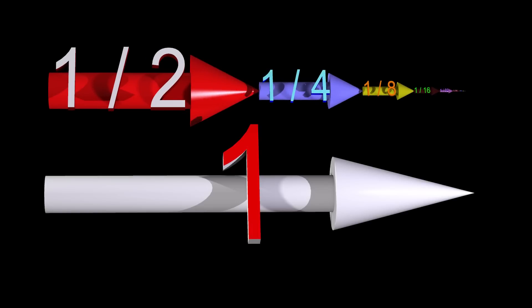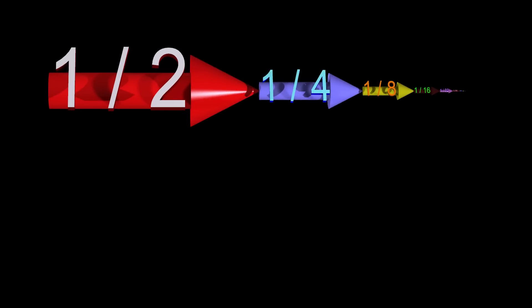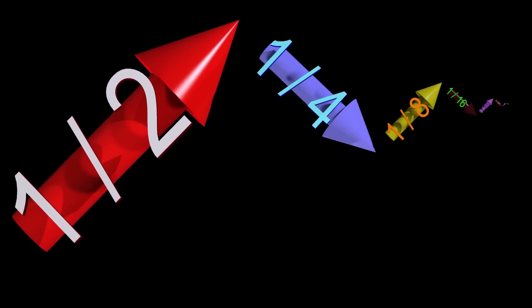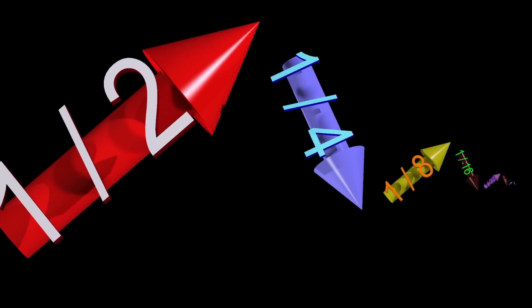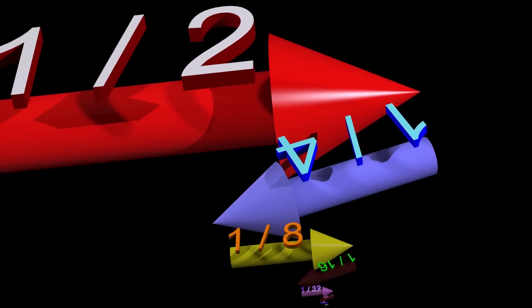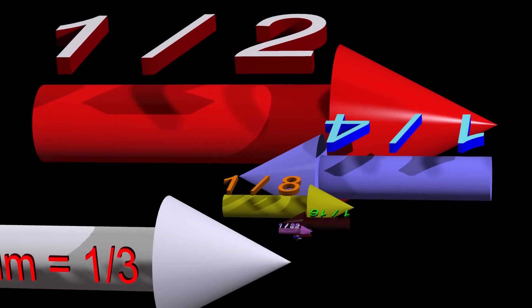When a series converges absolutely, we will always get the same sum regardless of the order in which we add the numbers in the sequence. This is true for both the original series where all the terms were positive, and the new series in which half the terms are negative.